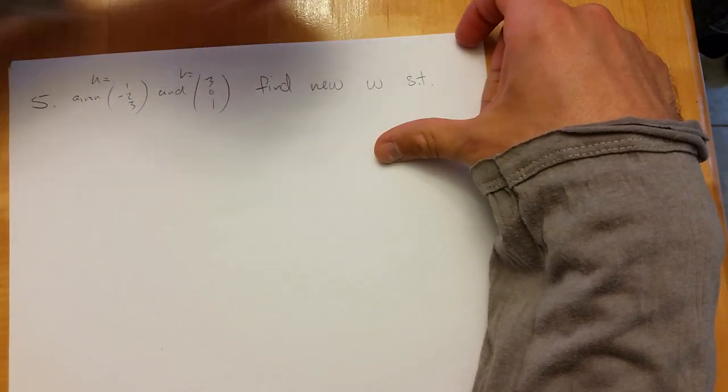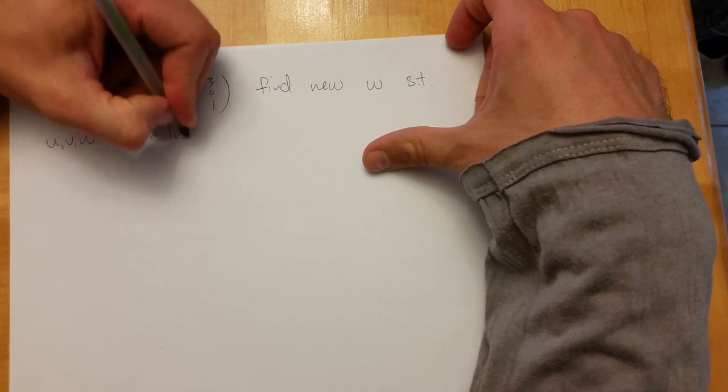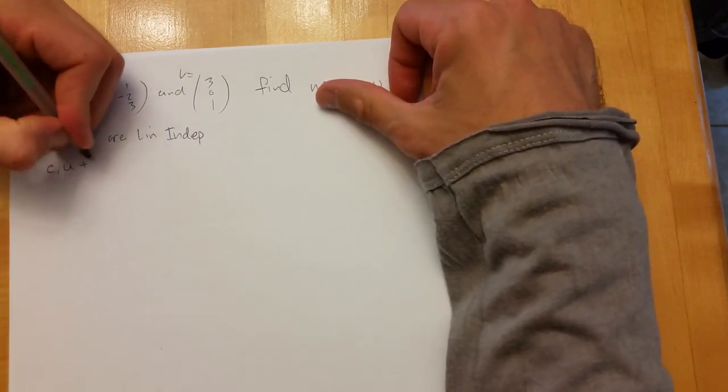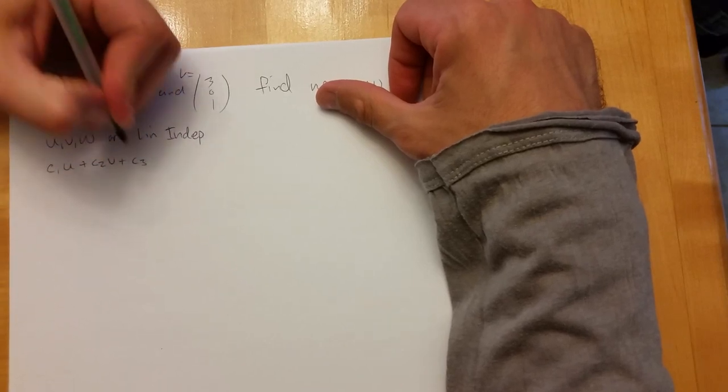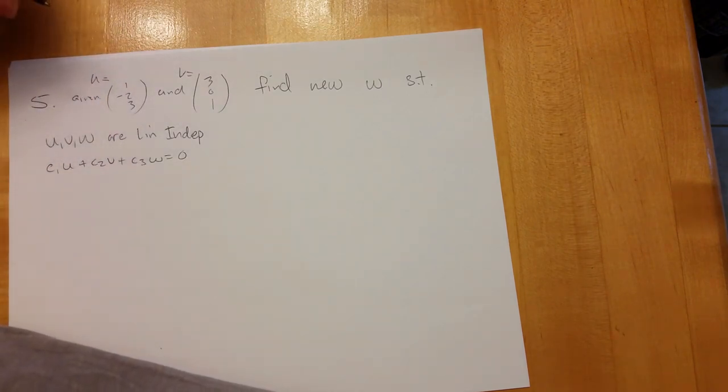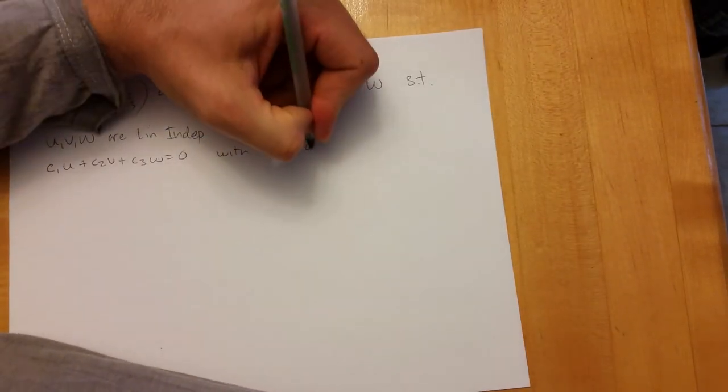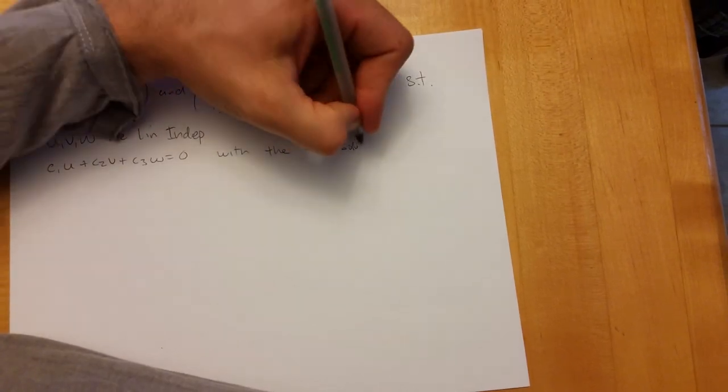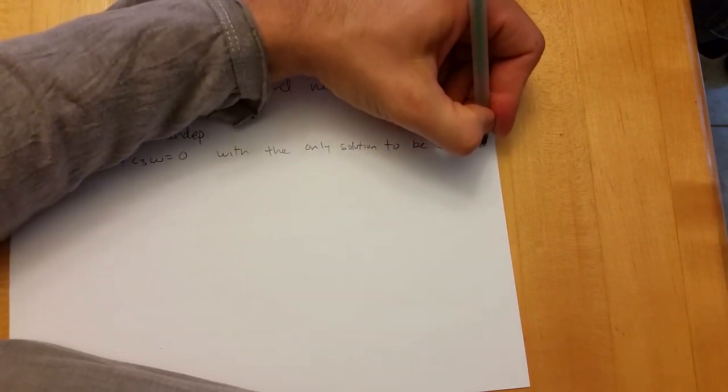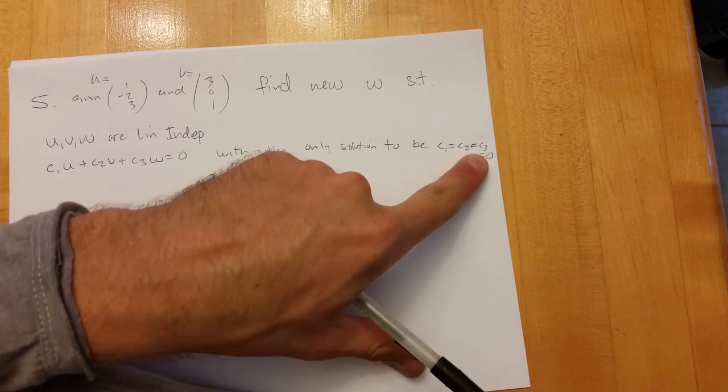W such that U, V, W are linearly independent. So I need c1·u plus c2·v plus c3·w equals zero. That's one way to go about it, and I want the only solution to be zero, zero, zero.